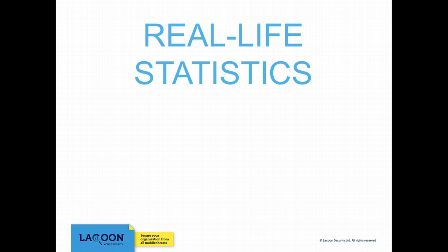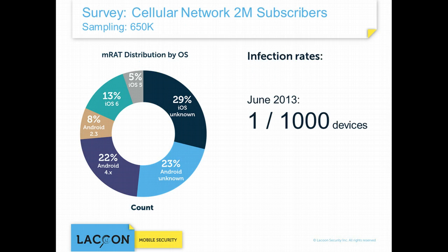To get a clear notion of how prevalent EMRATs are in reality, Lacoon Mobile Security partnered in June 2013 with a global cellular network provider and randomly sampled 650,000 subscribers. Nearly half of EMRAT-infected devices were iOS-based, which goes to show that when discussing mobile-targeted threats, iOS is certainly vulnerable to these types of attacks. Furthermore, 13% of compromised devices were iOS 6-based, which signifies relatively new attacks, as commercial mobile surveillance tools do not survive OS updates.